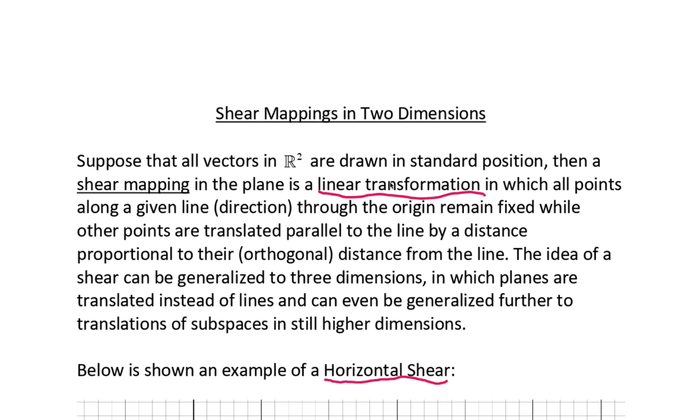I want to address a topic that your book does not. This is shear mappings or shear transformations in two dimensions. I'm going to suppose that all vectors in R2 are drawn in standard position, with initial point at the origin. Then a shear mapping in the plane is a linear transformation in which all points along a given line through the origin remain fixed, while all other points are translated parallel to the line by a distance proportional to the orthogonal distance from the line. The idea of a shear can be generalized to three dimensions in which planes are being translated instead of lines and can be even generalized further to subspaces in higher dimensions.